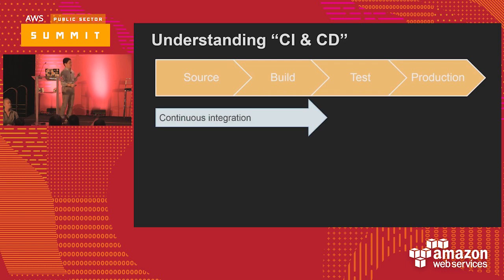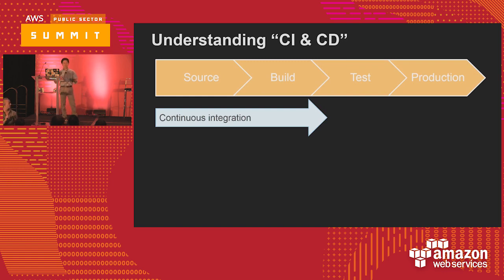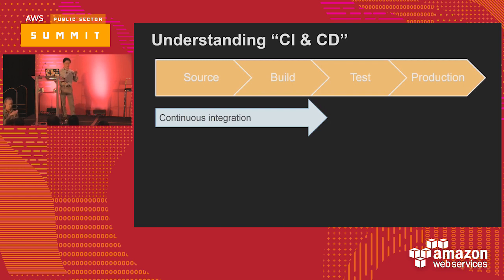Continuous integration basically means when a developer checks in code you push it to a build server, build it, and make sure everything is fine - automating those source-to-build steps. You need a feedback loop: if something happens and your build is broken, it sends an email or page to someone. I've heard some dev teams have a unicorn pass - if you broke the build, they put something on your table and say you have to fix it.